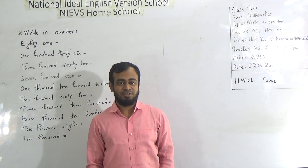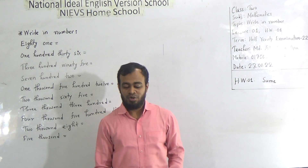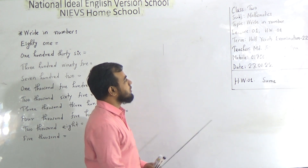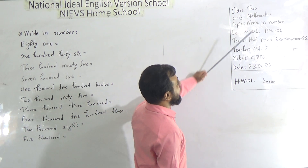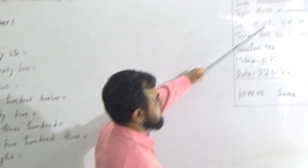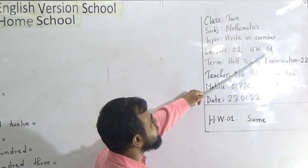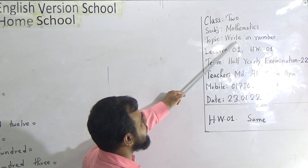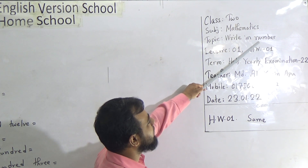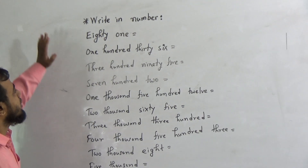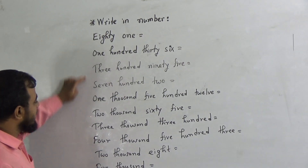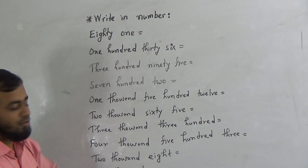Today we will take Math class for students of class 2. Today is the first Mathematics class in class 2. Our today's lecture number is lecture 1 and your exercise number is 1. Our today's topic is writing numbers in number form. You have already learned in class 1 how to write down numbers. Today we will learn 10 numbers.